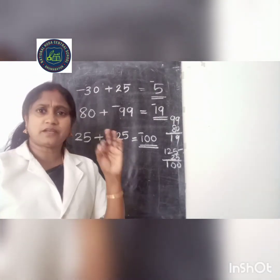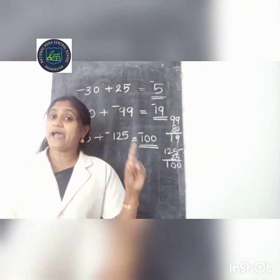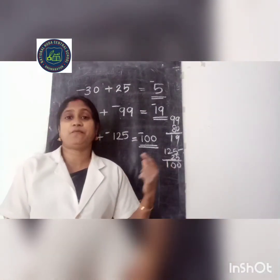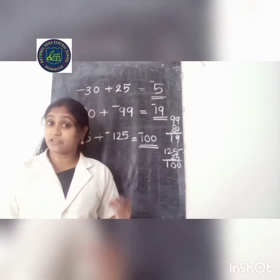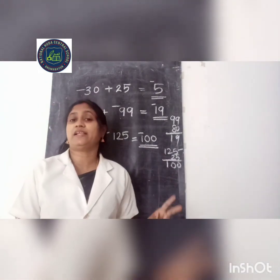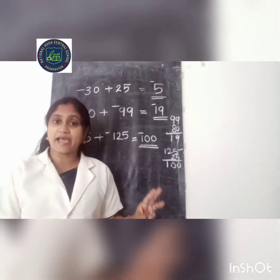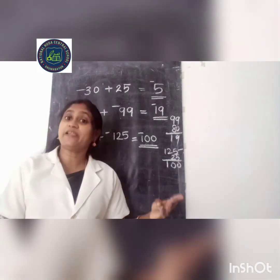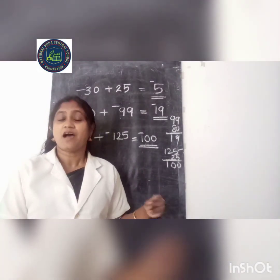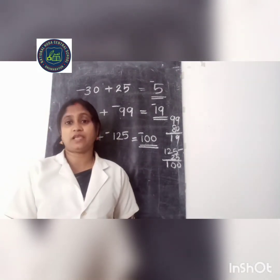So the 3 rules we discussed today are: first, if we add 2 positive integers, we will get a positive integer. Second, if we add 2 negative integers, we will get a negative integer. And the last rule: if we add 2 different sign integers, first we subtract them, then we give the sign of the greatest integer.